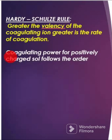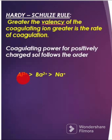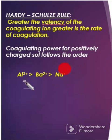Coagulating power for positively charged sol follows the order: Al³⁺ is having valency 3, barium is having valency 2, and Na is having valency 1. So, aluminium has the highest coagulating power.